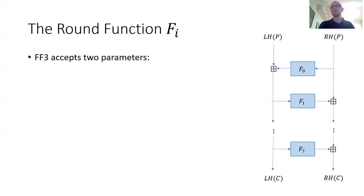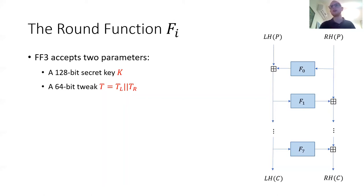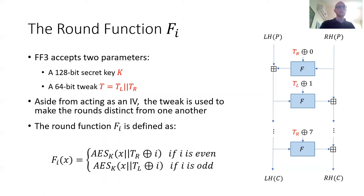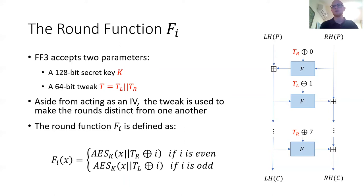The round function utilizes the tweak in order to make each round distinct. FF3 accepts two parameters: a secret key k and a tweak t. The tweak is divided into a left half and a right half, similarly to the state. In order to calculate the round function of a round i, we take the corresponding tweak — meaning the right half if the round is even and the left half if the round is odd — and XOR that with the number of the round. The result of that XOR is appended to the input of the function, and then all of that together is encrypted with AES with key k. The result of that AES is then truncated as necessary in order to fit the state. The important thing to note here is that the tweak is what makes the functions of each round distinct. If the tweak is identical in two rounds, then the functions are also identical.